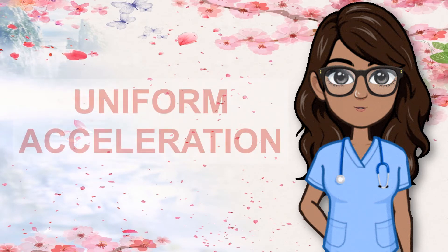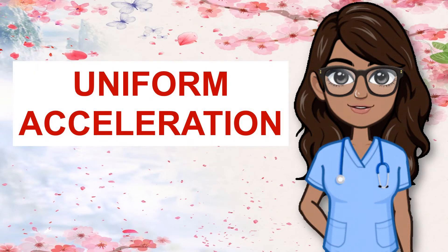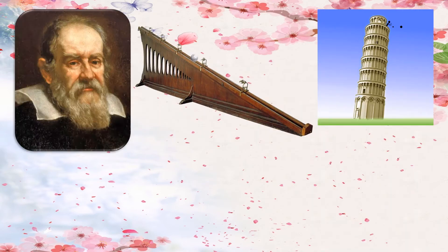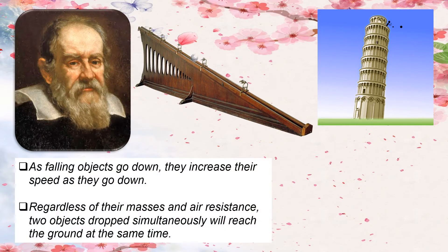Let's now study uniform acceleration. Galileo was interested in the behavior of falling objects. He knew that as falling objects go down, they increase their speed — this change in speed is acceleration. Although he did not have any tool to measure this change, he used inclined planes to reduce the acceleration of moving bodies and take a close look at them carefully. With his experiments, Galileo proved that regardless of their masses and air resistance, two objects dropped simultaneously will reach the ground at the same time. He also discovered that objects fall with uniform acceleration.